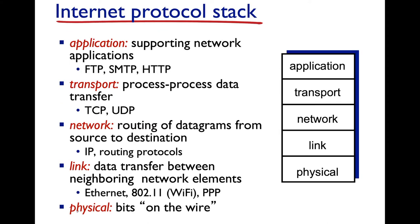Let's take a look at the Internet Protocol Stack — the five-layer modern Internet Stack that we'll study, from the top down. The application layer supports network applications such as file transfer, mail transfer, and hypertext transfer protocol, which is the foundation of the web. The transport layer handles the passing of data from one process to another process on different or the same machines. The two major protocols are TCP — transmission control protocol — and UDP — unreliable datagram protocol — which carry different guarantees about the reliability of delivery.